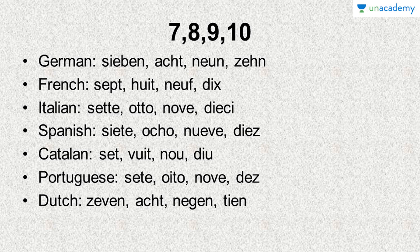Going forward, I have grouped four numbers together: seven, eight, nine and ten. In German it is sieben, then acht, then neun — in German EU sounds as in neun — and zehn. In French it's sept — this P is silent, sept. Huit — the H is silent, huit. Neuf and dix — it's dix again like six, the X is not pronounced, so dix. But if it comes with something else it will be pronounced. But here standalone it's dix.